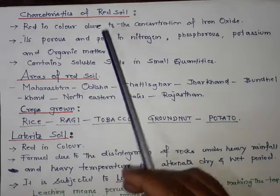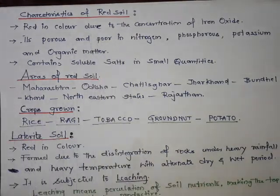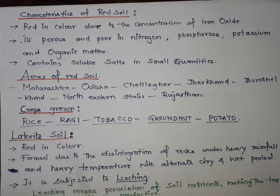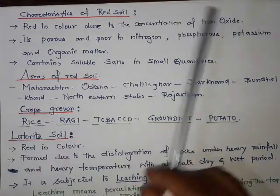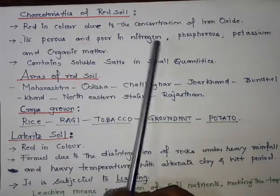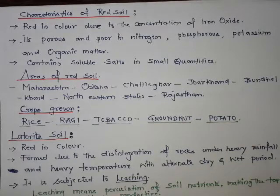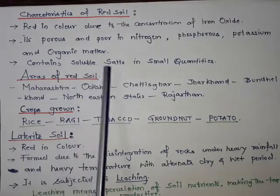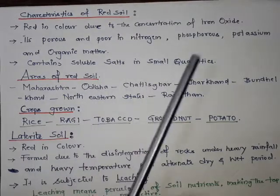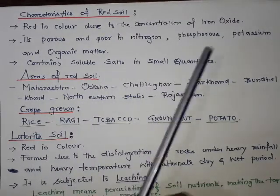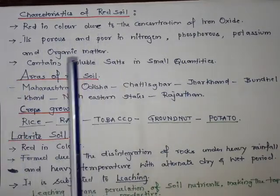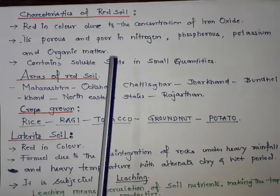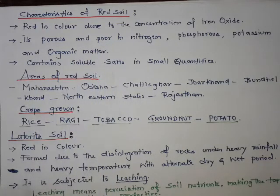These are the drawbacks of red soil. If asked why red soil is not suitable for agriculture, the answer is: it is rich in iron oxide, it is porous, poor in nitrogen, phosphorus, potassium, and organic matters, and contains soluble salts in small quantities — all these factors make red soil unsuitable for agriculture.